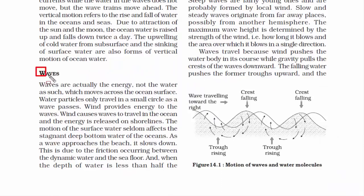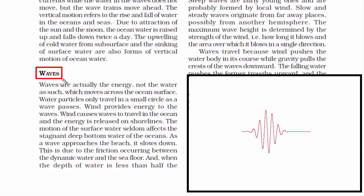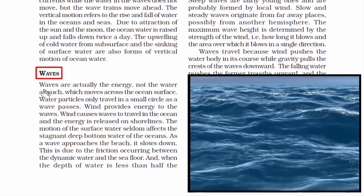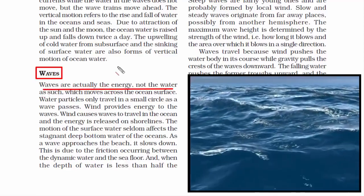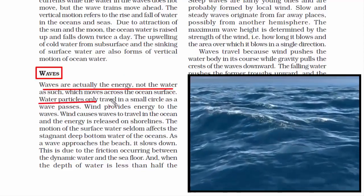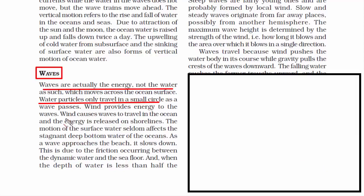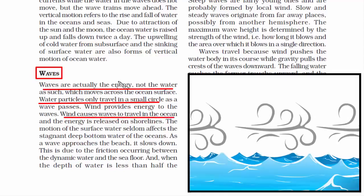Let's look at the first topic of this chapter: waves. A wave is a to-and-fro motion, meaning back and forth around a reference point, wherein energy is moving away from the source in the form of a disturbance. When you look at waves in the ocean, they are actually the energy and not the water. Water particles travel through this energy. It is the wind that provides this energy — that's why we say wind causes waves to travel in the ocean.